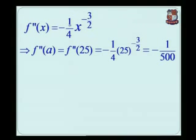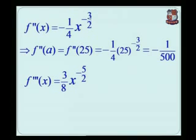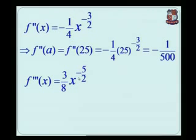f''(x) is equal to minus 1 by 4 x raise to minus 3 by 2. We take the derivative of this to get the third derivative. f'''(x) is equal to minus 1 by 4 multiplied by minus 3 by 2, which gives plus 3 by 8, times x raise to minus 3 by 2 minus 1, so x raise to minus 5 by 2. This is the third derivative of root x.